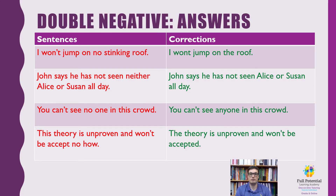Here are our corrections to the sentences. In the first sentence, you have to remove the phrase 'no stinking' from the sentence to get 'I won't jump on the roof' and correct the double negative. In the second sentence, you have to remove 'neither' to get 'John says he has not seen Susan or Alice all day.' In the third sentence, you have to change 'no one' to 'anyone' to get rid of the double negative. And in the last sentence, you simply have to remove 'know-how' to get 'This theory is unproven and won't be accepted.'